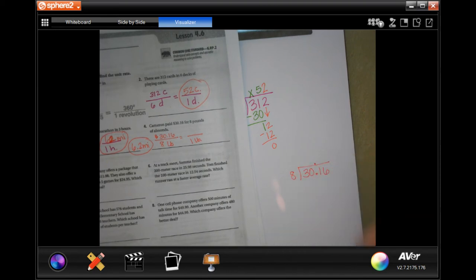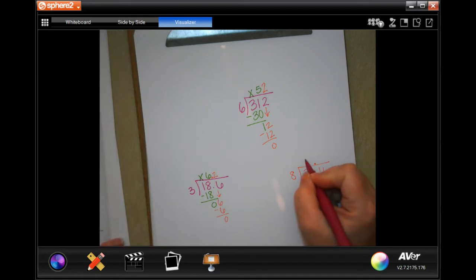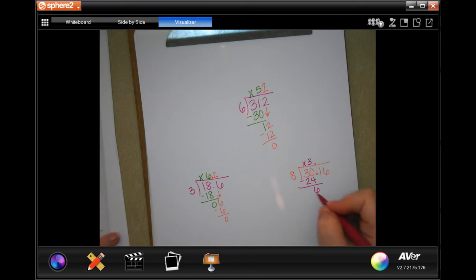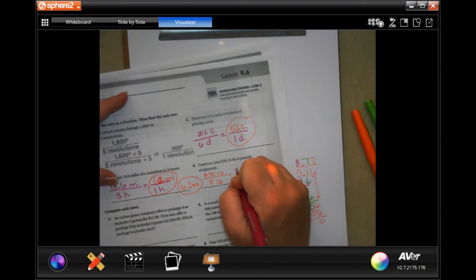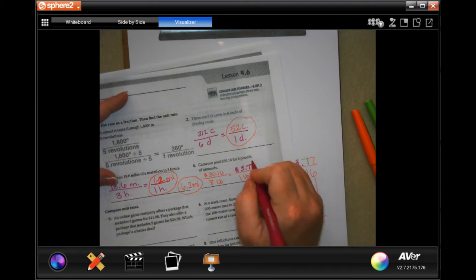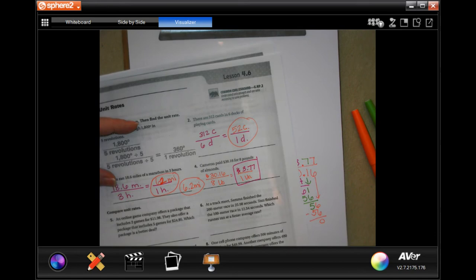Move my decimal up. So 8's not going to go into 3, placeholder. 8 will go into 30, 3 times, which is 24. 6. 6 is less than 8, so I can bring down my 1. 8's going to go into 61, 7 times. 7 times 8 is 56. I get 5. 5 is less than 8, so I can bring down my 6. We just said 8 goes into 56, 7 times, which is 56. Subtract, get 0. So 3.77. So $3.77 for 1 pound.